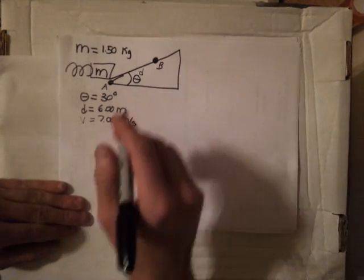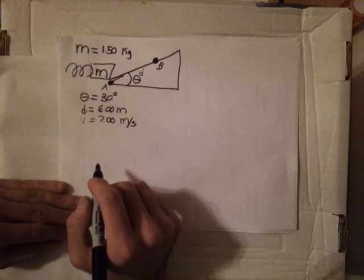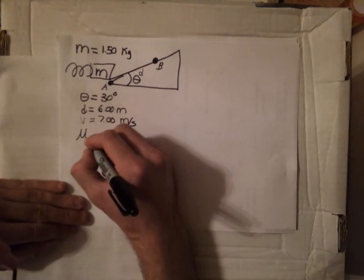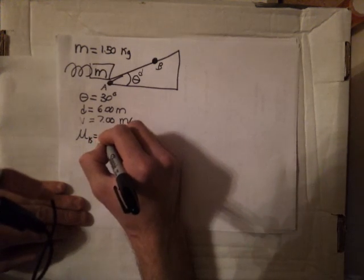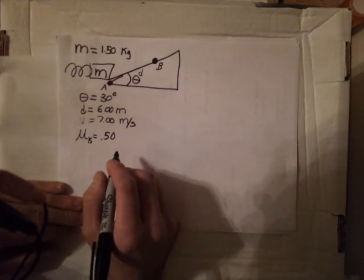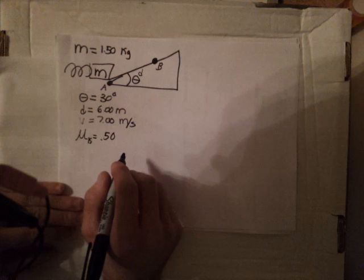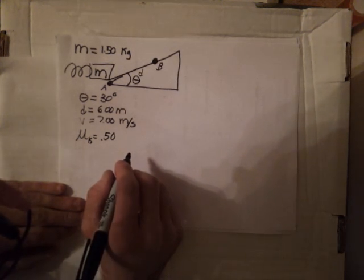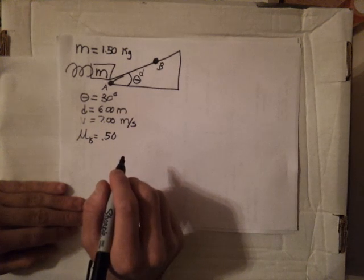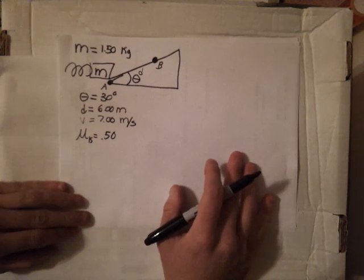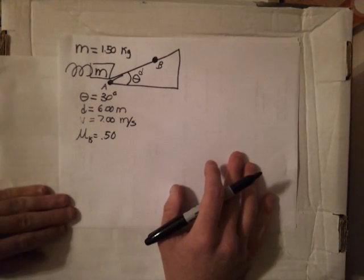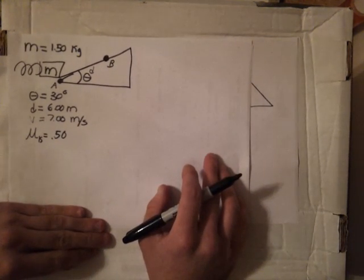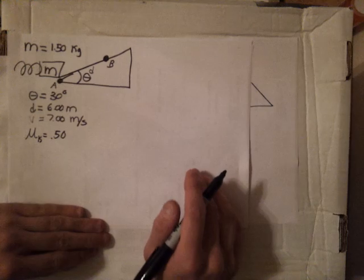We're also told that there is a friction force acting on the block as it goes up the ramp, and there's a coefficient of kinetic friction equal to 0.50. The question asks us to calculate the amount of potential energy that the block had initially stored when it was compressed against the spring. The best way to approach this problem is to write out our understanding of the work-energy theorem in the most general form.